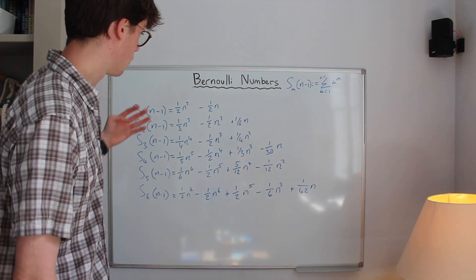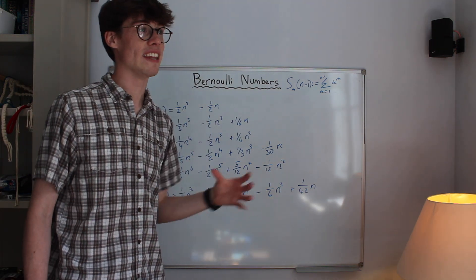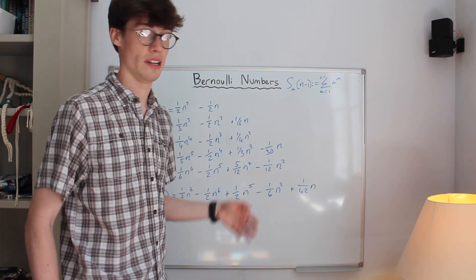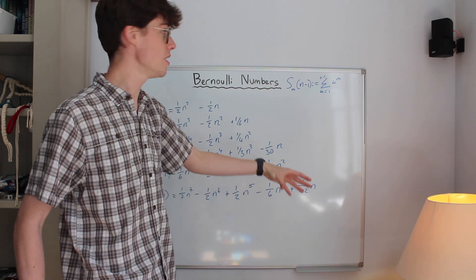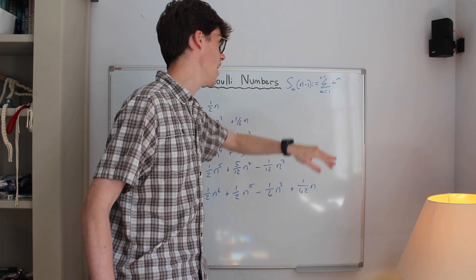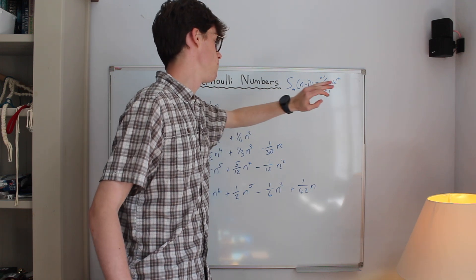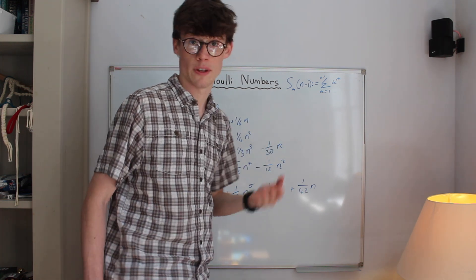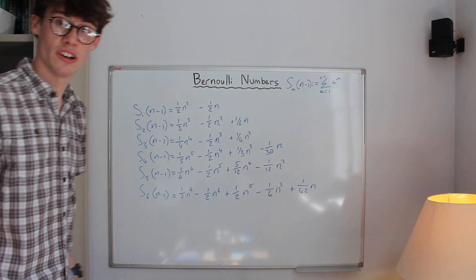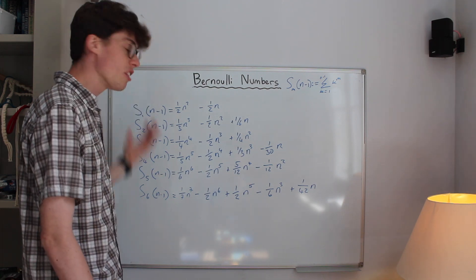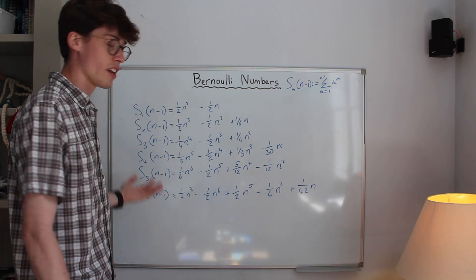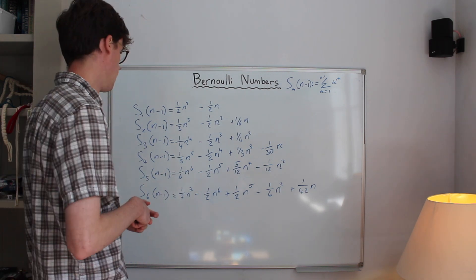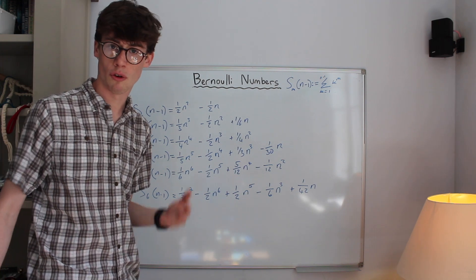First, we're going to do it the way Bernoulli did, which involves spotting patterns in the formulae that sum the integers to a given power. I've written my notation up here so everyone's clear: when I say S_m(n−1), I mean the sum starting from 1 and ending at n−1 of k to the m. So when m equals 1 I'm summing the integers, when m equals 2 I'm summing the squares, and I've written out the first six values of m here.